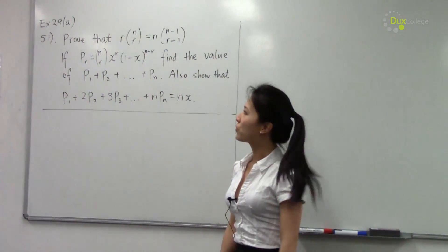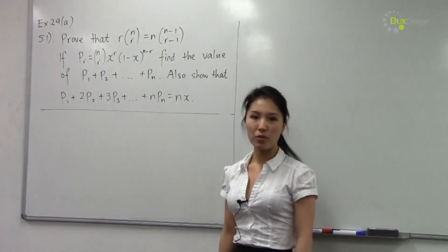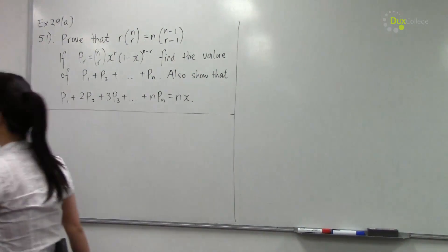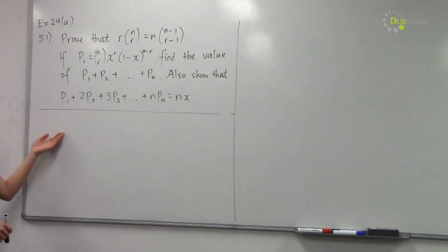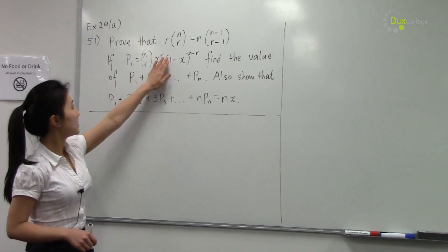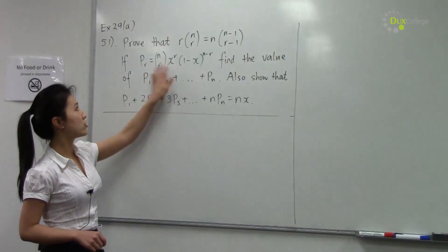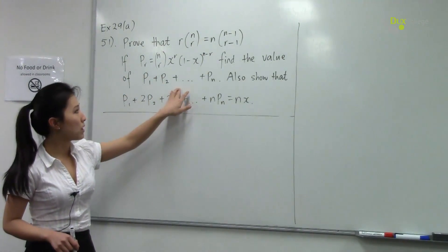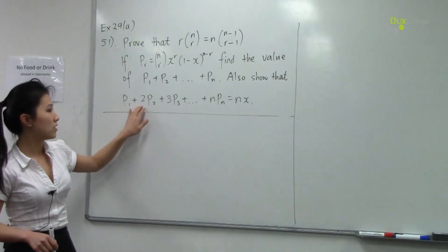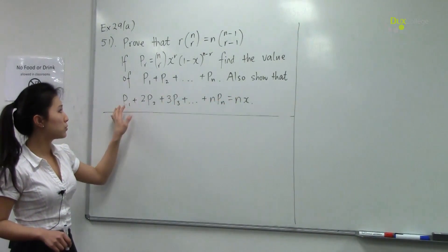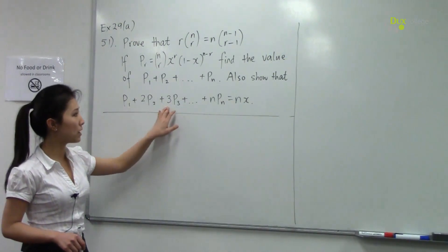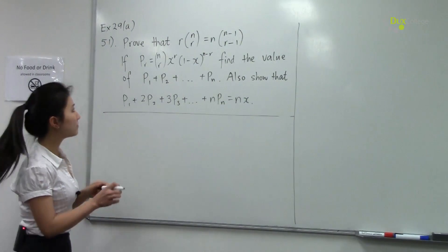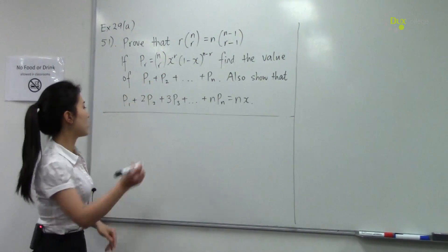Today we are going through question 51 from exercise 29a. The question says: prove this identity, then given the expression for p(r), find the value of p1 + p2 + p3 + ... + pn. Also show that p1 + 2p2 + 3p3 + ... + n·pn equals n times x.